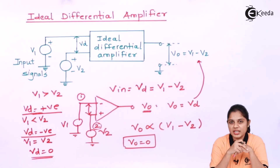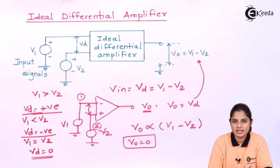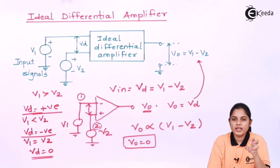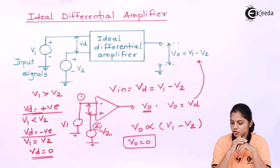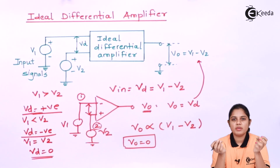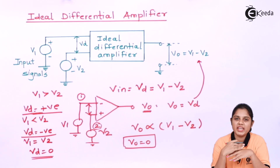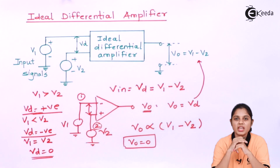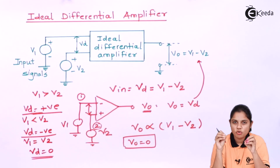This zero-output condition is beneficial when dealing with a common mode signal. For example, when there is noise, it gets added to both terminals of the operational amplifier. If the same signal — whether noise or an actual signal — is applied to both input terminals, the difference between them will be zero, so the output will be zero. In the case of noise, the noise gets subtracted and the difference becomes zero.